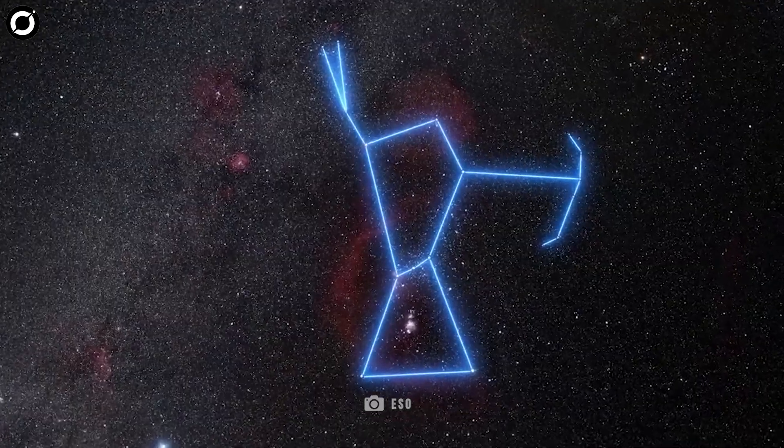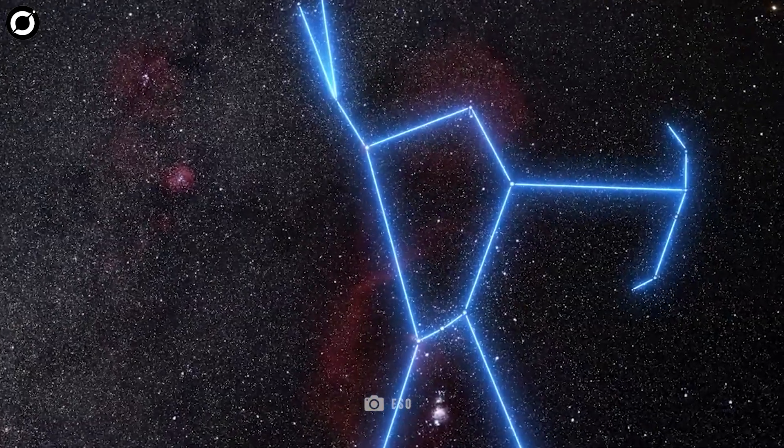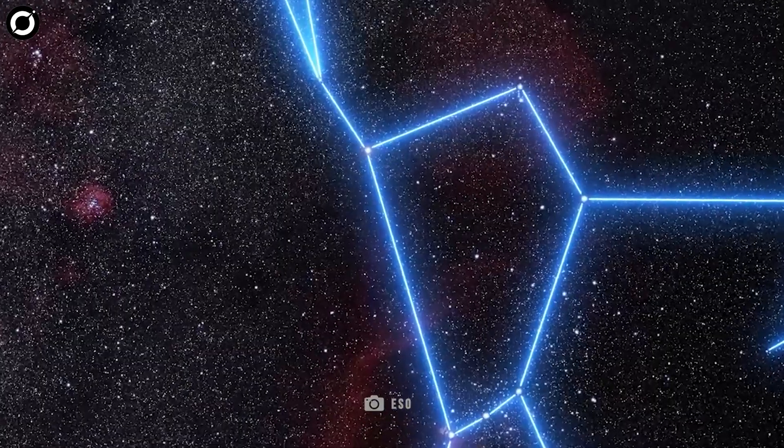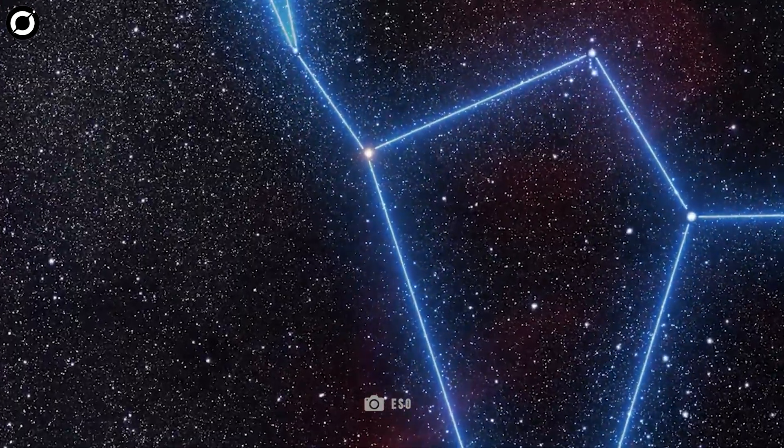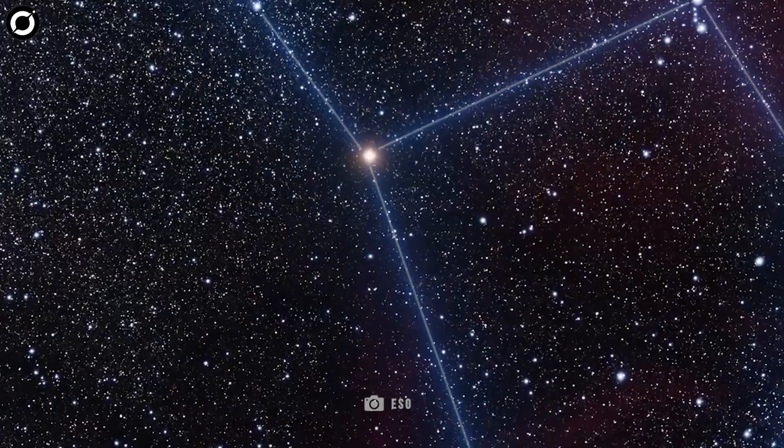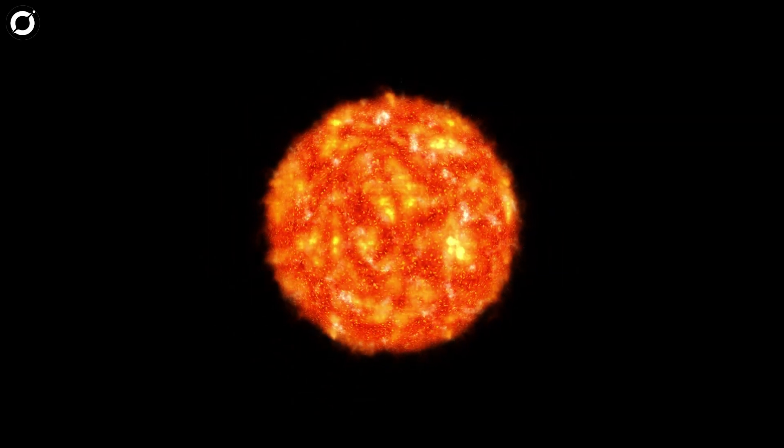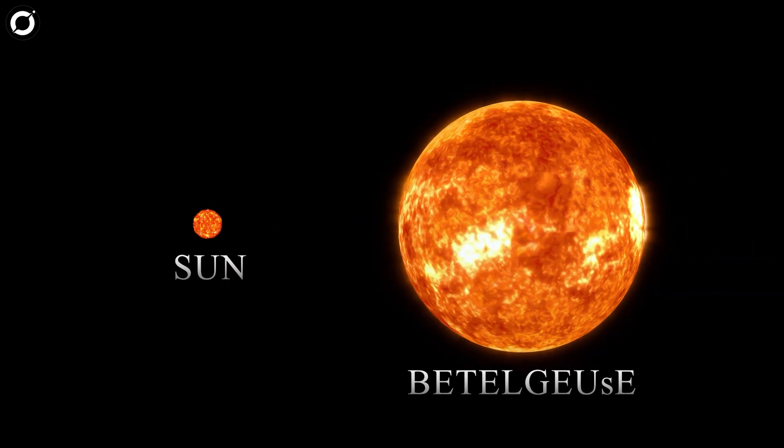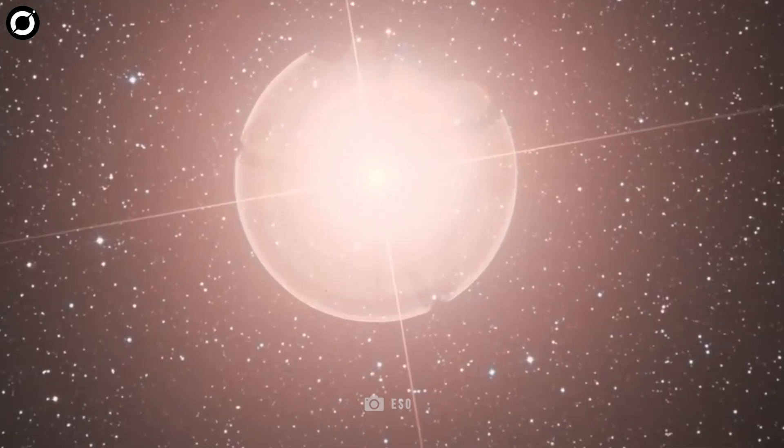Betelgeuse is a red supergiant star, and it's not just any star. Located in the Orion constellation, it's one of the brightest stars in the sky. But here's the catch. It's massive. If you could shrink our sun down to the size of a marble, Betelgeuse would be the size of a beach ball. That's how big we're talking.